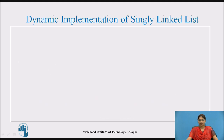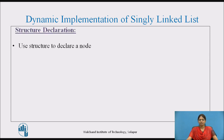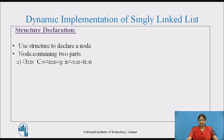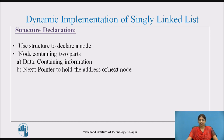Let's see the dynamic implementation of single linked list. For that we need the structure declaration. We use the structure to declare a node. A node contains two parts — a data part which contains the information, and the next part which holds the pointer to the address of the next node. So the struct node with data and next part are declared.